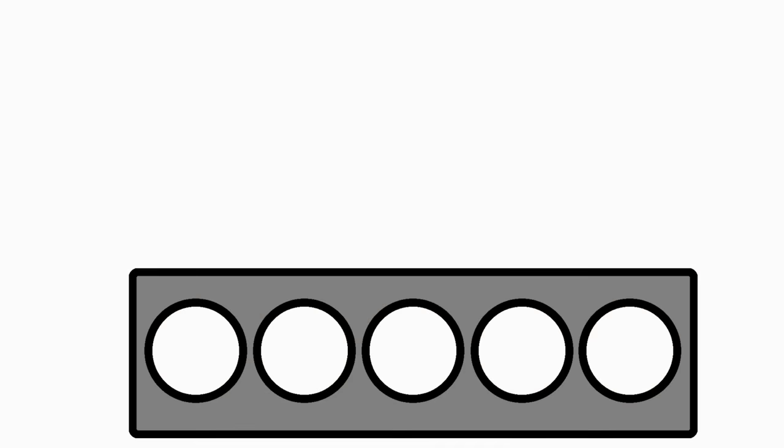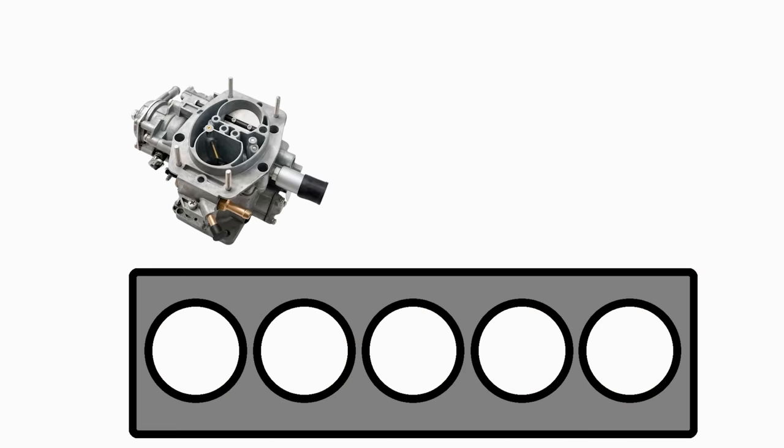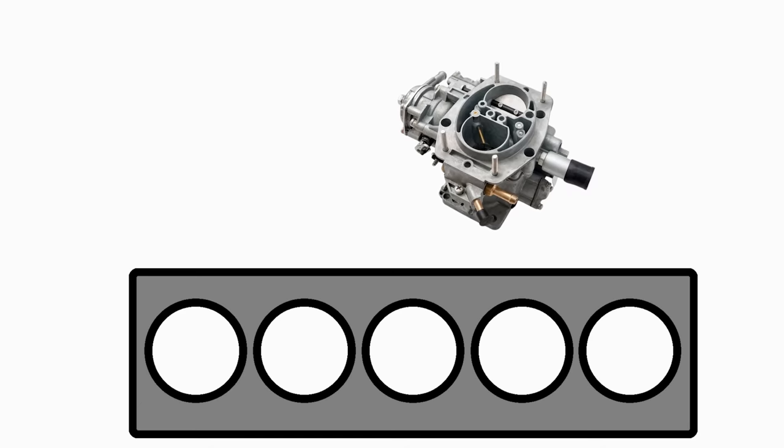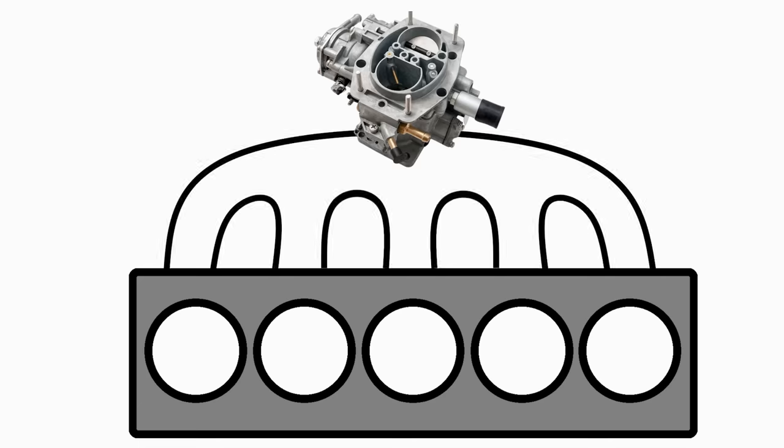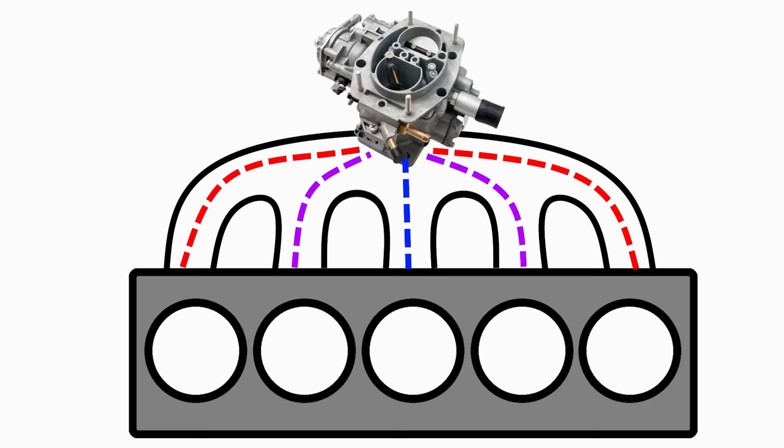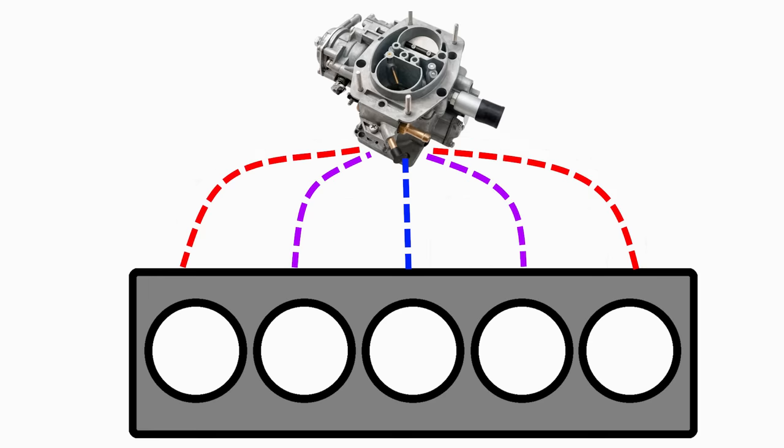So here we have our inline-5 engine. Let's start by trying to make it work with a single carburetor. Logic dictates that we should place the carburetor in the middle. Now, let's connect the carburetor to the engine via an intake manifold. Okay, do you see the problem? Yeah, it's the very different length of the intake manifold runners. Because we have both a long engine and an odd number of cylinders, we are forced to have a great difference in runner length, which can lead to unequal performance of individual cylinders, resulting in a rough running engine.